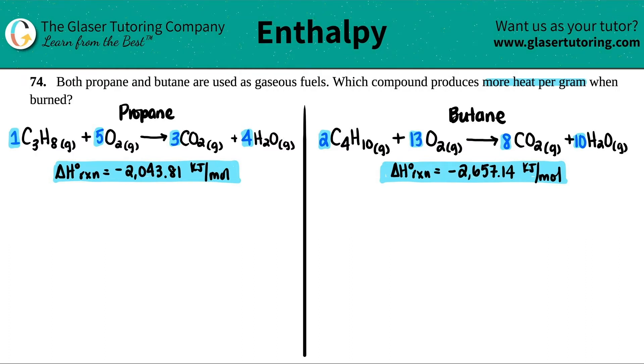So it seems that for butane, C4H10, it does produce a little bit more heat, right? 2,657.14 kilojoules as opposed to just propane, which is 2,043. Chances are it's because butane weighs more. So it's going to be having more weight. But now we want to know which compound produces more heat per gram.